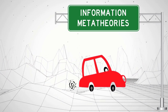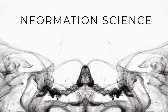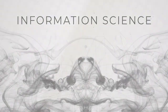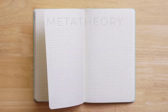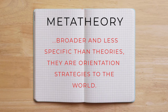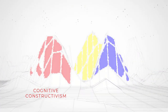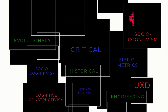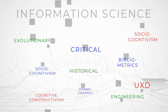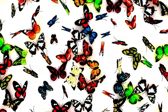Information meta-theories. In the early 2000s, the epistemological landscape of information science was cast in a new and more variegated way by the introduction of meta-theory. Meta-theories are the often unarticulated premises upon which empirical research and theory are based. Broader and less specific than theories, they are orientation strategies to the world. In a landmark paper on meta-theory, cognitive constructivism, collectivism, and social constructionism were identified as three powerful lenses or 'isms' of information science. Later, upwards of a dozen additional meta-theories were named. This big idea helped information science become more aware of its interplaying perspectives, each supplying its own conception of information.